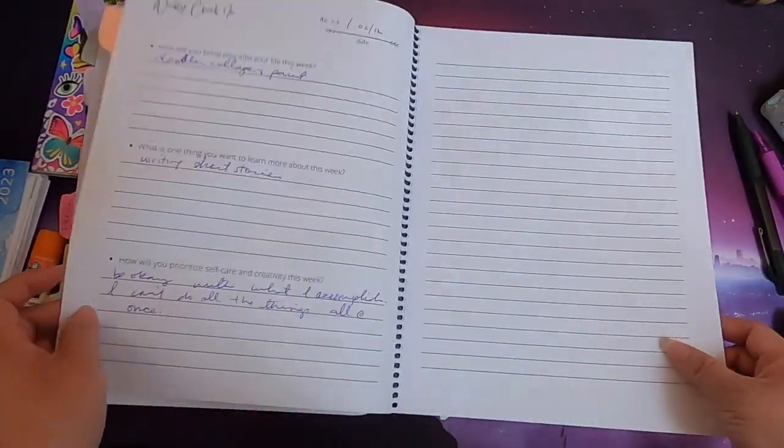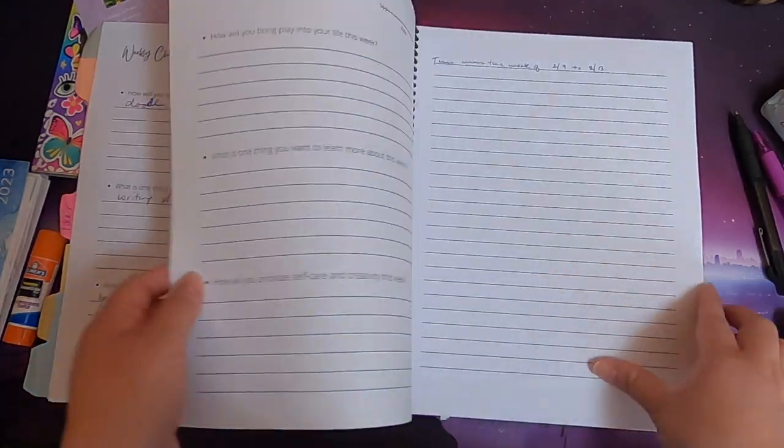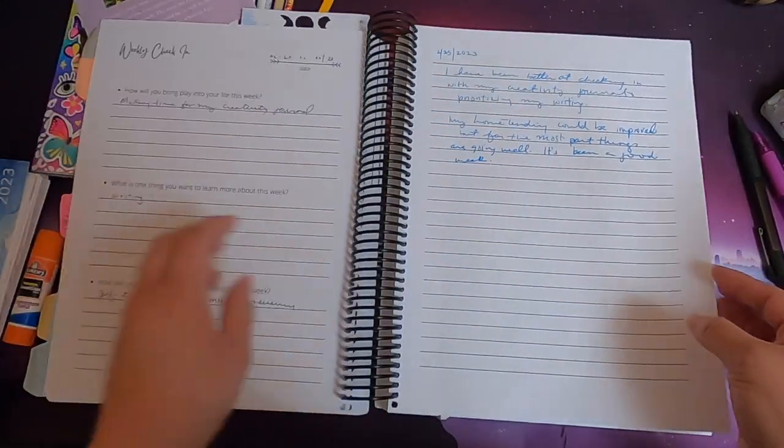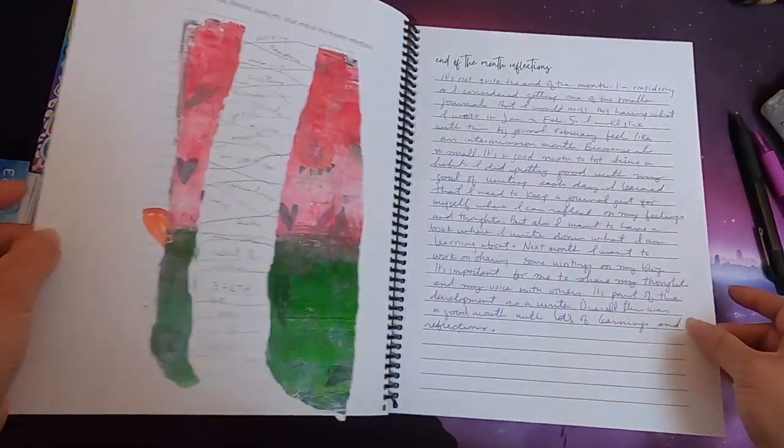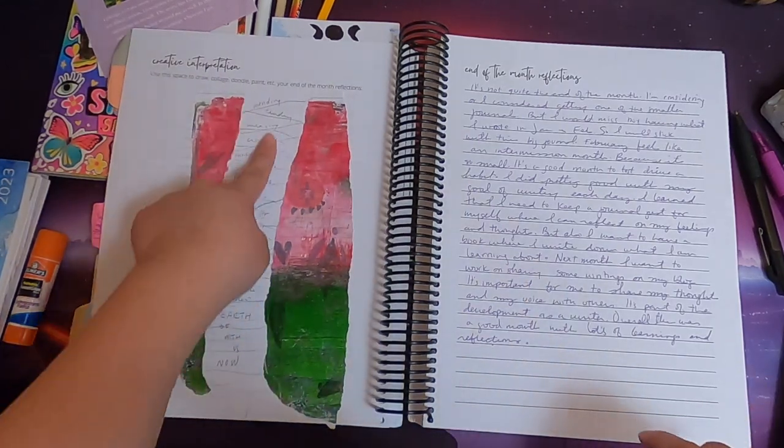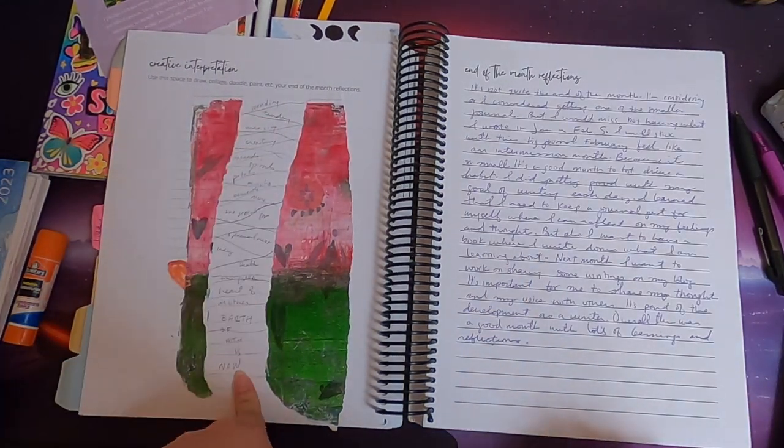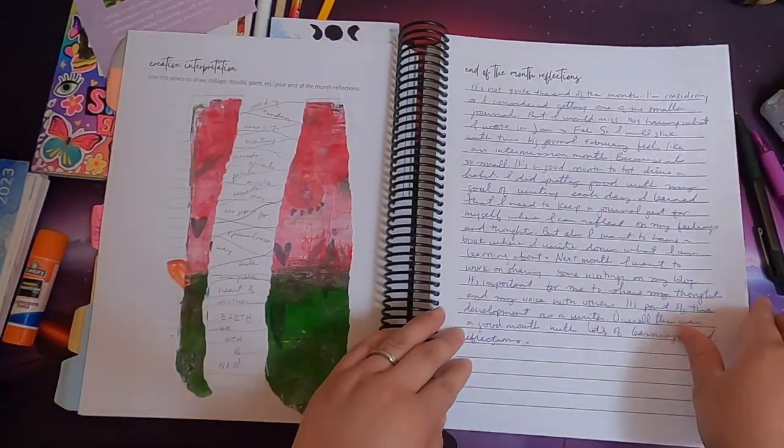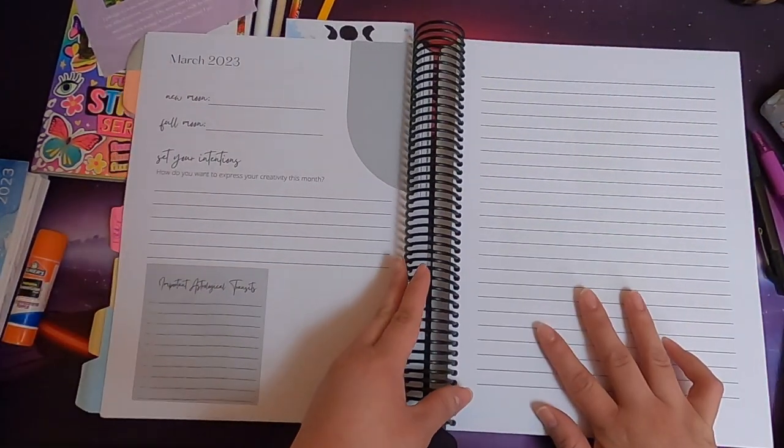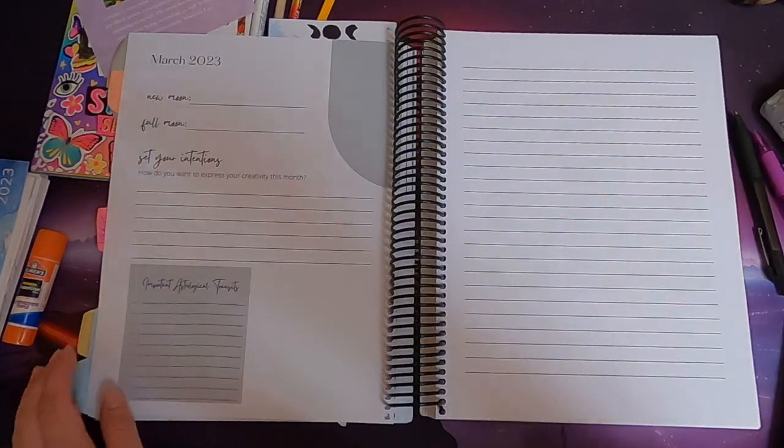So this week or this month the weekly check-ins were not, I didn't do them as much and that's okay. I have the space here if I want to. This is my end of the month reflection, I ended up writing a little poem and then my reflections. So I want to show you how I set up the March journal, so stay tuned for that.